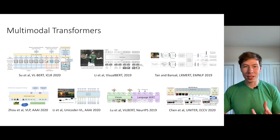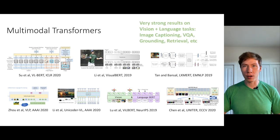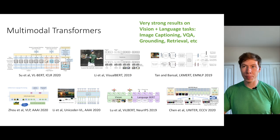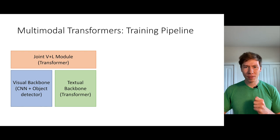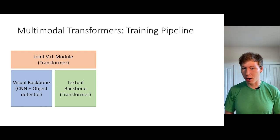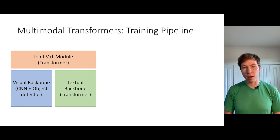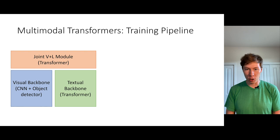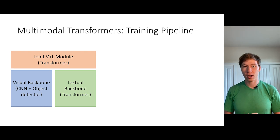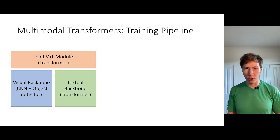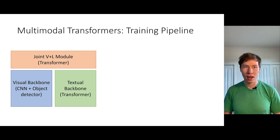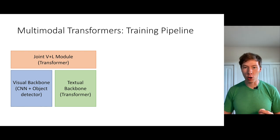There have been a whole bunch of very similar models for multimodal transformers, and in general they give very strong results for vision-plus-language tasks like image captioning, VQA, grounding, or retrieval. But if you think about the training pipeline of what these models are actually doing, there's something kind of unsettling. There are basically three components: the visual backbone that extracts visual features, the textual backbone that processes text, and the multimodal joint vision-plus-language transformer module.